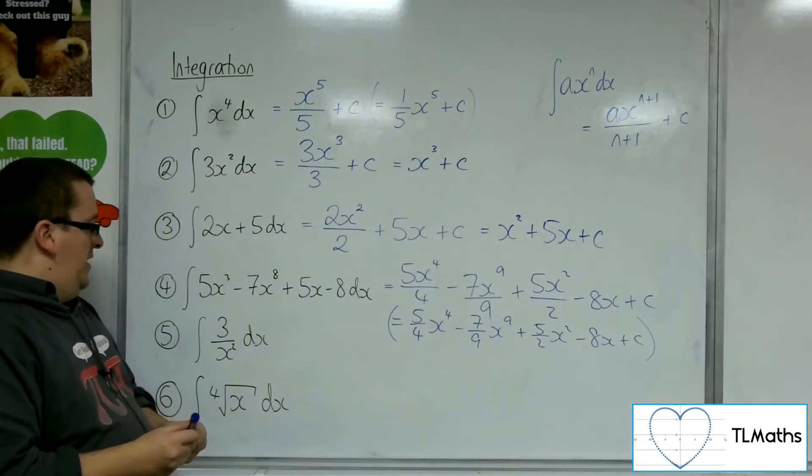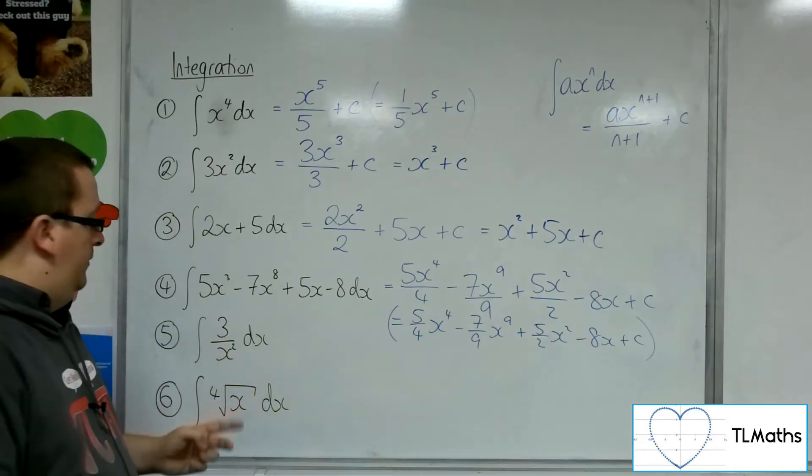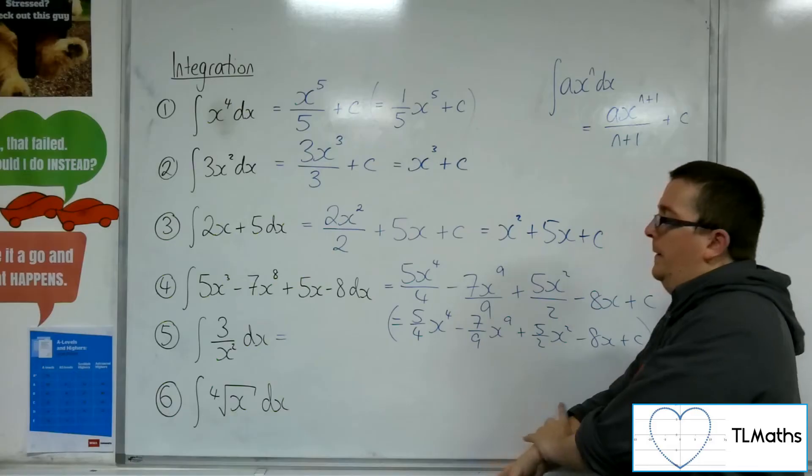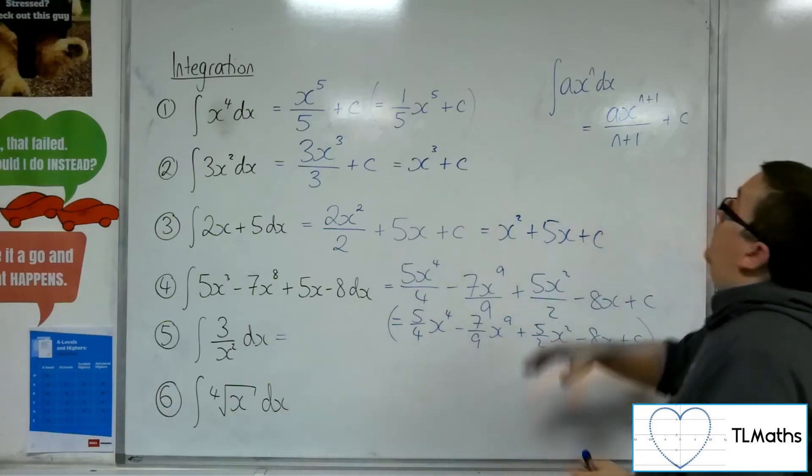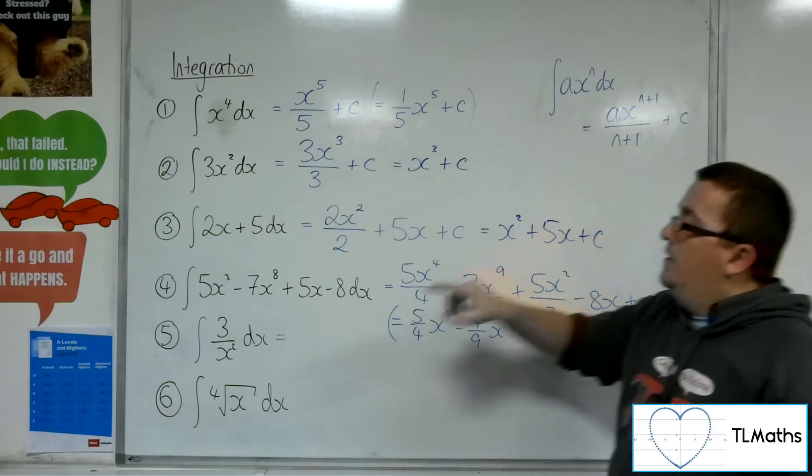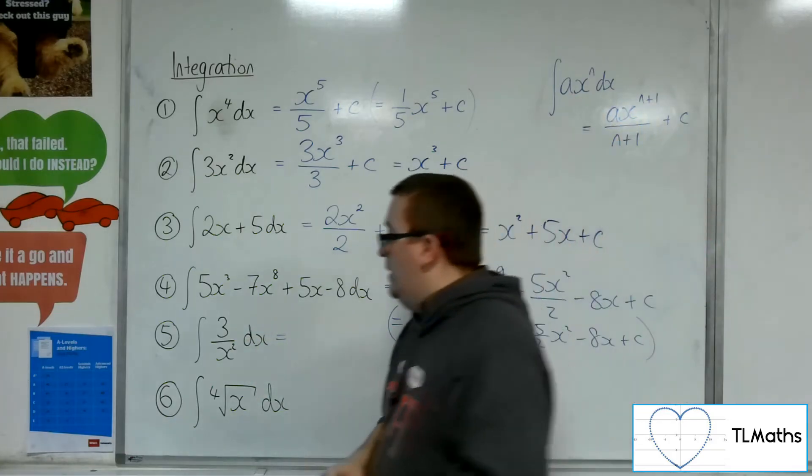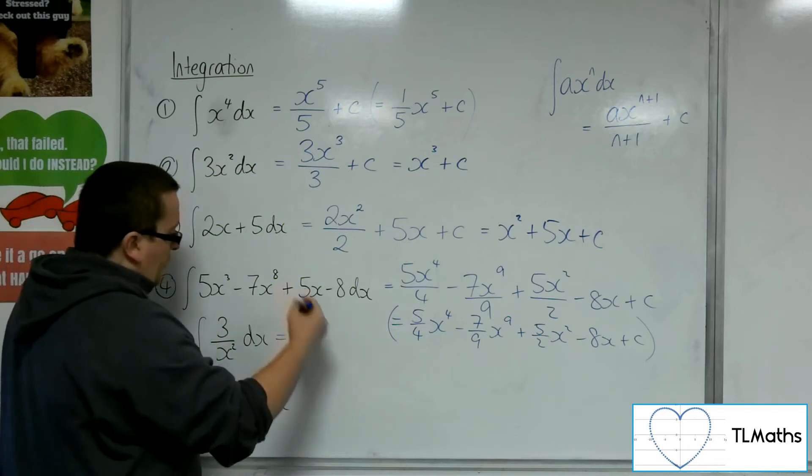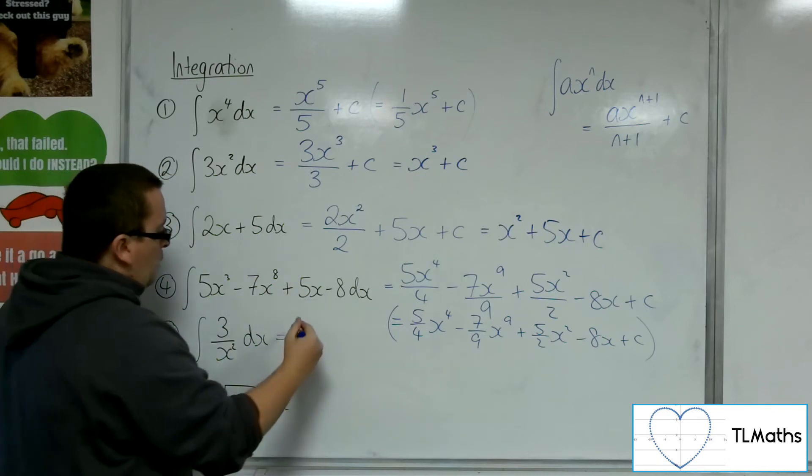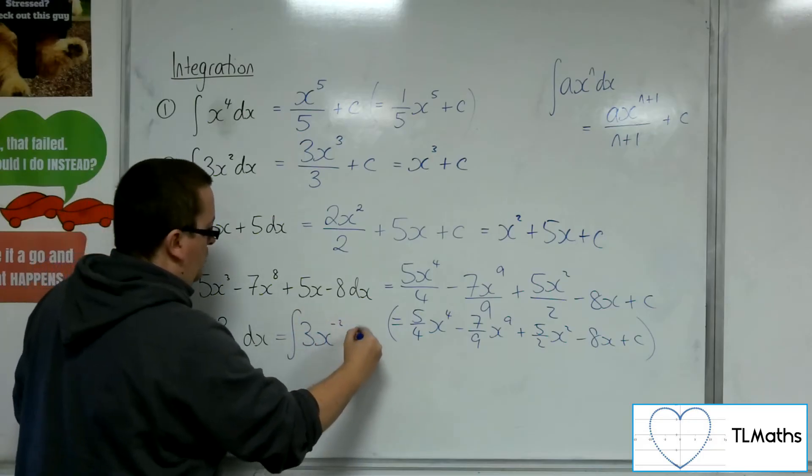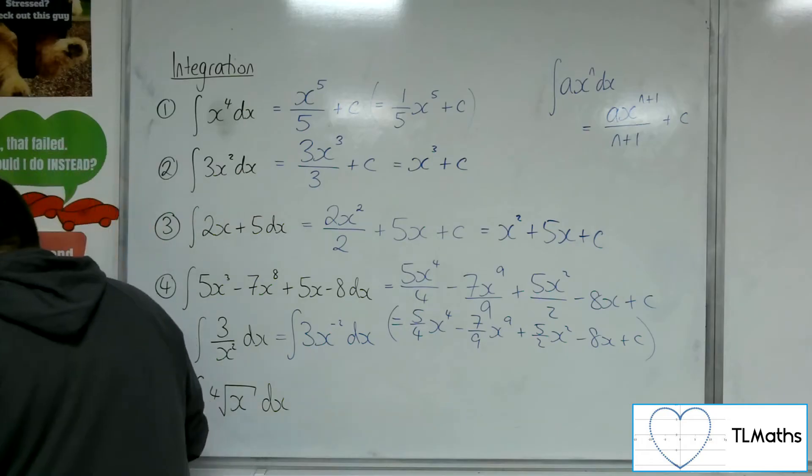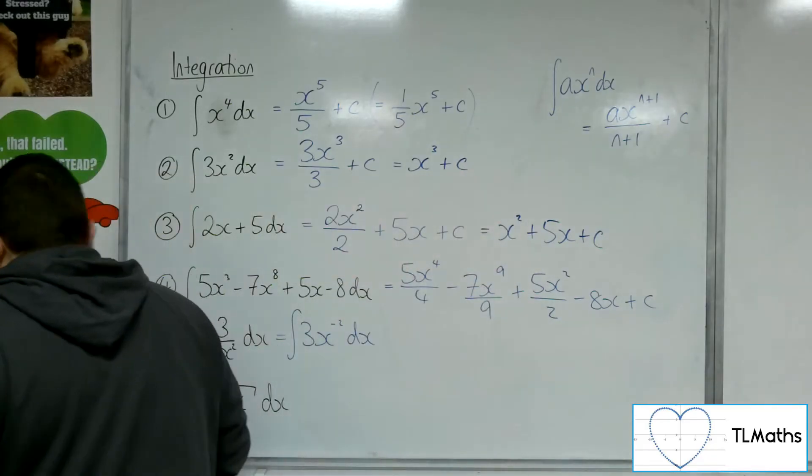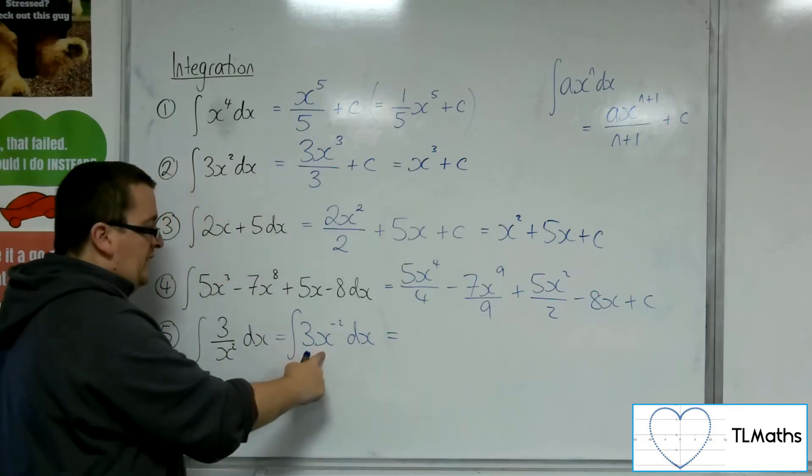So let's move on to number 5 here. We've got the integral 3 over x squared dx. So before you do anything with integration, you need to make sure that the format is like this, in ax to the n. It's not currently like that, 3 over x squared. So, you want to prepare your vegetables before you integrate. You want to write that as 3 lots of 1 over x squared, which is the integral of 3 lots of x to the minus 2. So before I can integrate, I need to make sure that this is in the correct format. Now, I can integrate.